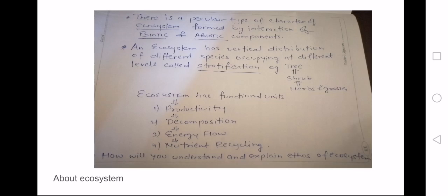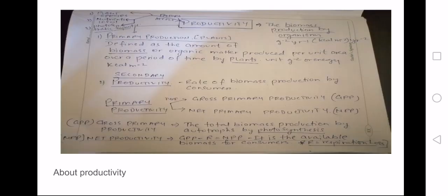Productivity, as I discussed, it is the production of biomass by the plants or the consumers. We will discuss more about it in my next slide. Now, as you see here, productivity is the biomass produced by the producers. It is also affected by different factors. Above there you can see...